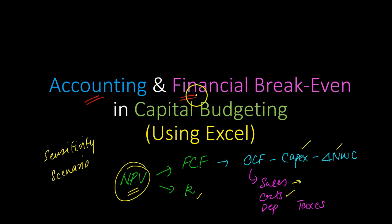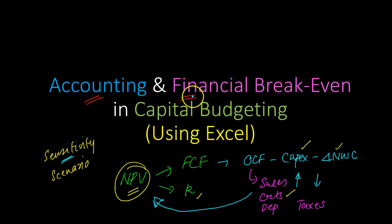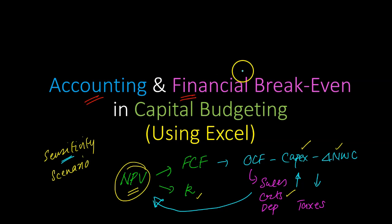The concepts of accounting and financial break-even are there to supplement sensitivity and scenario analysis. When we do sensitivity analysis, we ask: if sales end up higher or lower than expected, what is the impact on NPV? Accounting and financial break-even work in the opposite direction — rather than asking what happens to NPV when sales fluctuate, they ask: what is the level of sales at which our project breaks even?